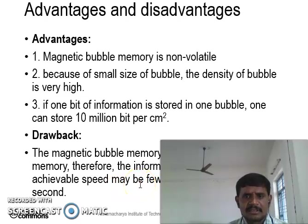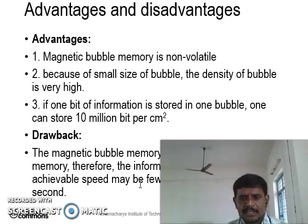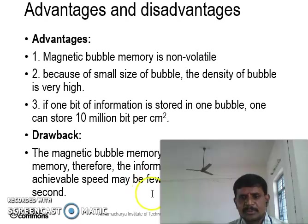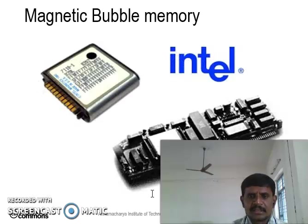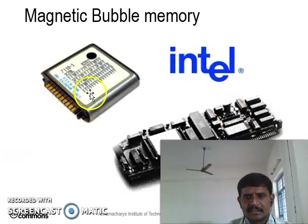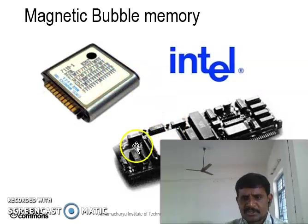Drawbacks of bubble memory: the magnetic bubble memory is not a random access memory, therefore information must be accessed serially. The achievable speed may be only a few hundred kilobytes per second. These are the limitations of magnetic bubble memories, which are used in chips as well as microprocessors.